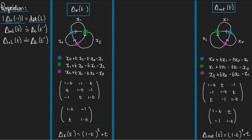Part 2 of the proposition says that if you take the Alexander polynomial of a mirror — that's the mirror of the link L — then you get the Alexander polynomial but with t inverse substituted in place of t. And the same is true for the reverse.